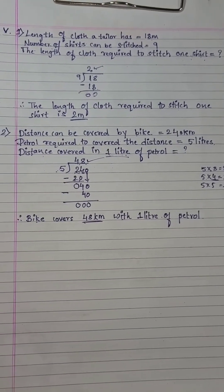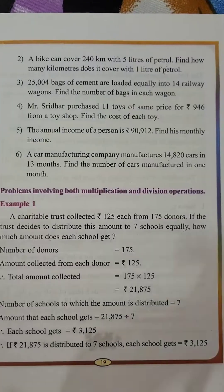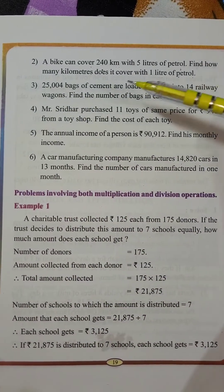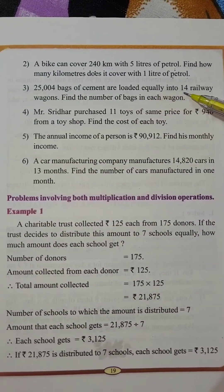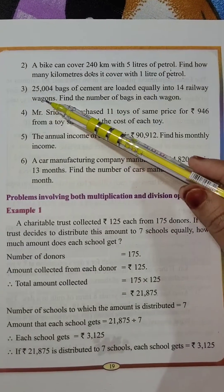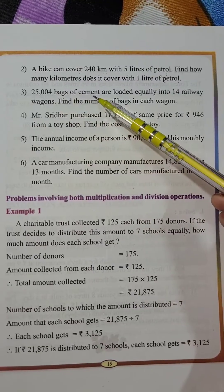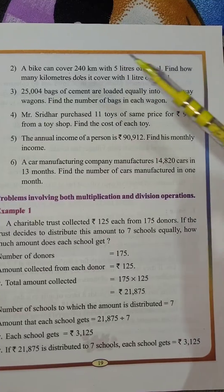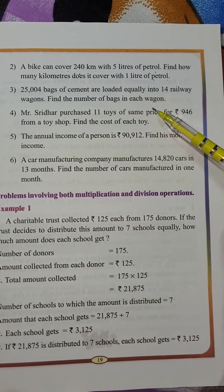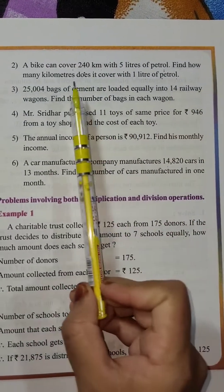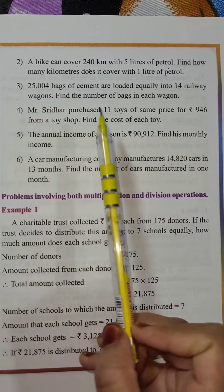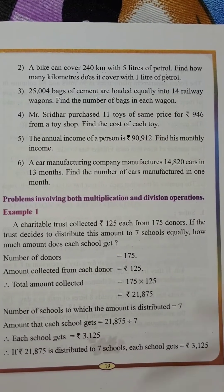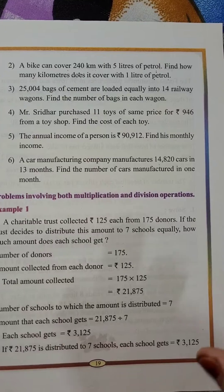Understood children? Good. Now let us move to the third problem. 25,004 bags of cement are loaded equally into 14 railway wagons. Find the number of bags in each wagon. Here 25,004 bags of cement are loaded equally into 14 railway wagons.